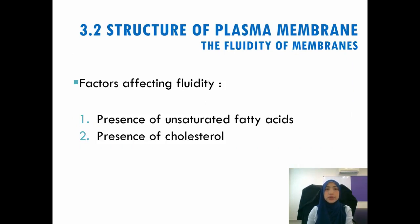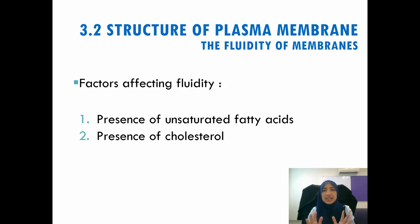Membrane fluidity tends to decrease with temperature until the phospholipids settle into a closely packed arrangement and the membrane solidifies. Two factors affect fluidity: the presence of unsaturated fatty acids and cholesterol. For example, if you cook a patty and leave the pan overnight, the remaining grease solidifies by morning — that is an example of membrane fluidity. As temperature drops, the membrane switches from a fluid state to a solid state.